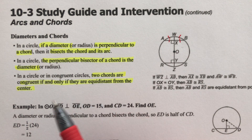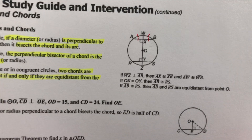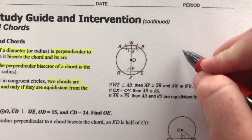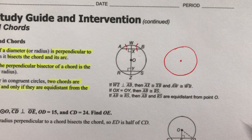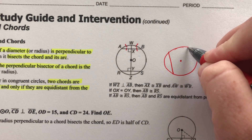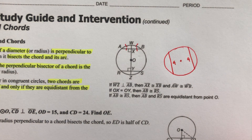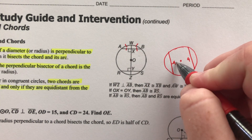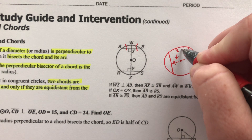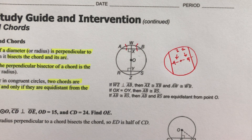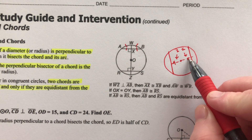In a circle, two chords are congruent if and only if they are equal distance from the center. That's a big one you'll see a lot. If one chord is length 4 and another chord is also 4, then those chords are equal distance from the center — say 2 units each. If the chords are the same length, they're the same distance from the center.